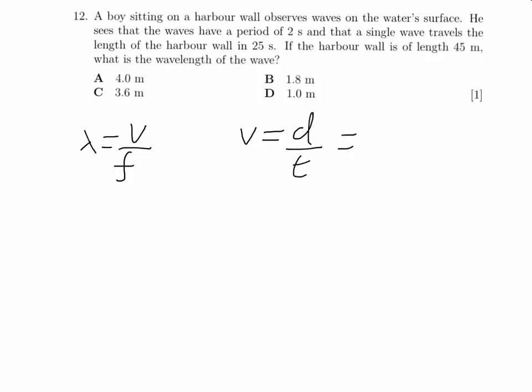So we're going to find the wave speed by doing the distance that the wave travels divided by the time taken for it to travel that distance. So our distance here is 45 meters and the time that it takes is 25 seconds.